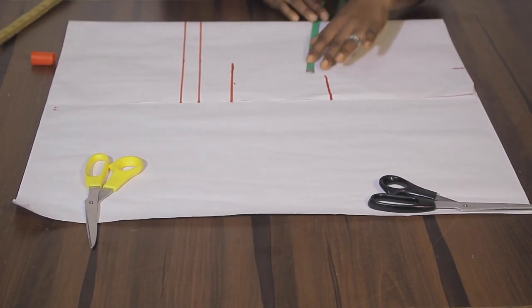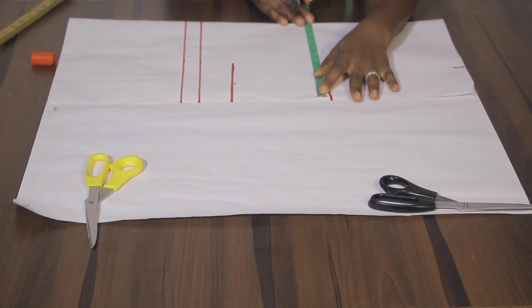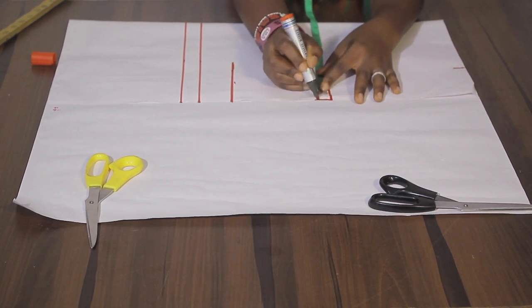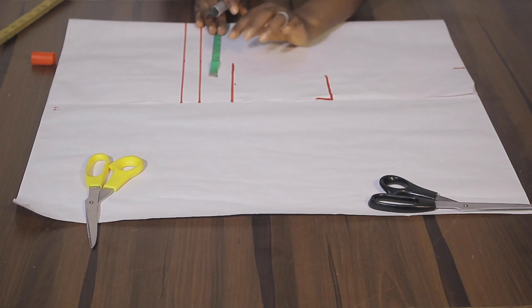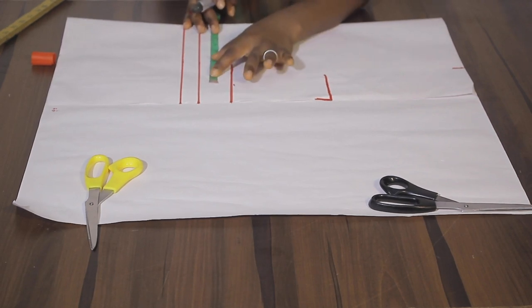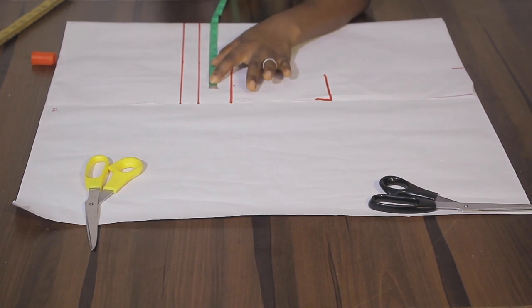Now we're going to be taking the bust circumference measurement plus 8 divided by 4, or divided by 4 plus 2. And below the underbust length I'm going to be taking the underbust circumference measurement plus 8 divided by 4, or divided by 4 plus 2.